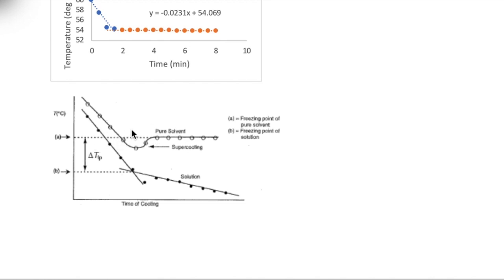For our experiment, supercooling should be ignored in the sense that the freezing point should be based on the linear part of the curve and the intersection of those two parts.